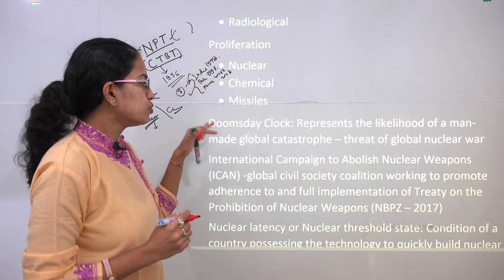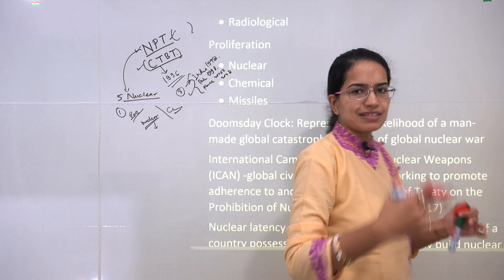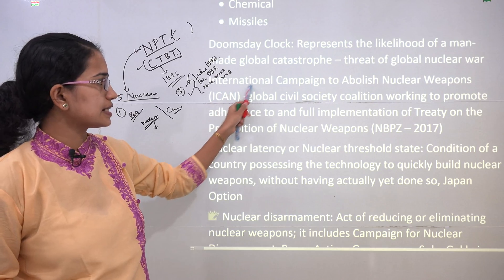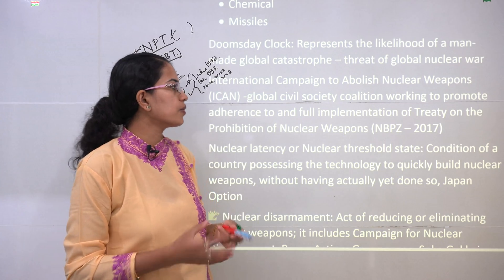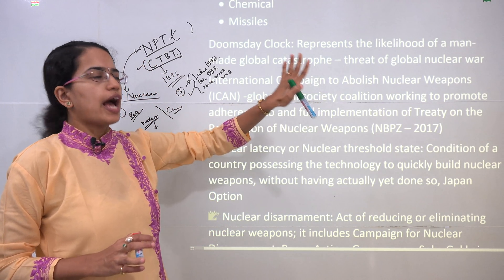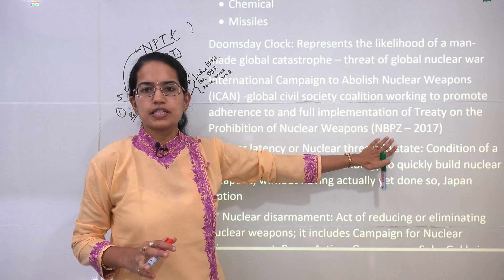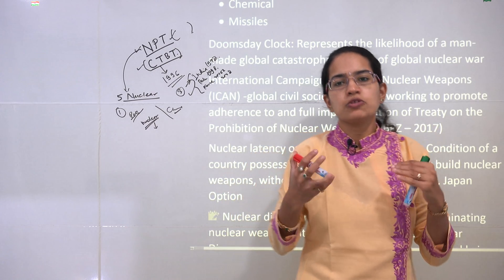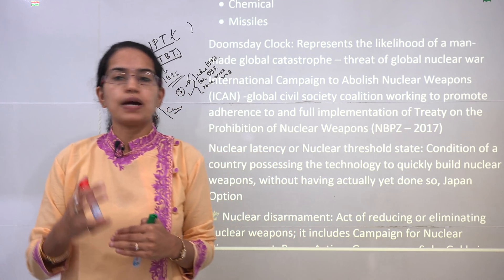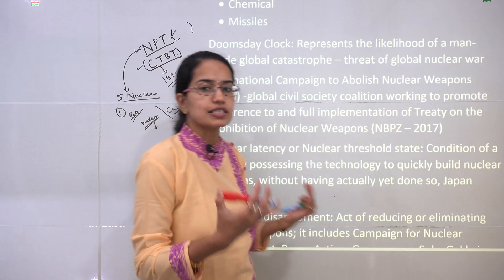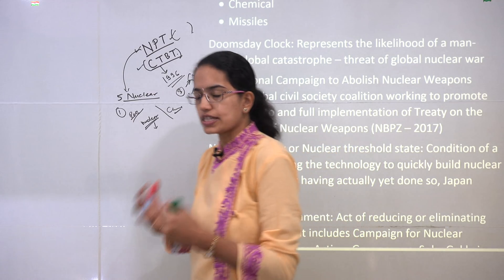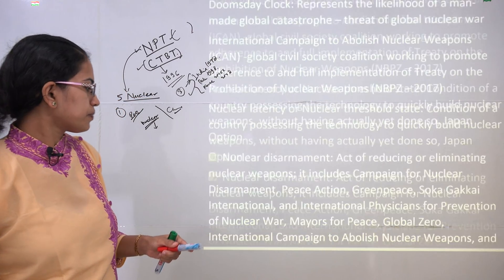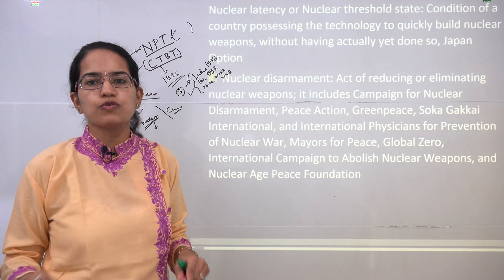Some important terminologies: the Doomsday Clock represents the man-made chances of global disaster, primarily including the threat of nuclear war. The International Campaign to Abolish Nuclear Weapons is a society working to promote adherence to the NPT; this organization won the Nobel Peace Prize in 2017. Nuclear latency or nuclear threshold state refers to nations which have the potential to develop nuclear power but have not done so — also known as the Japan option. Nuclear disarmament refers to the idea of reducing or eliminating the use of nuclear weapons.